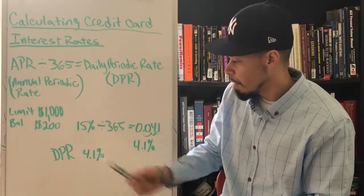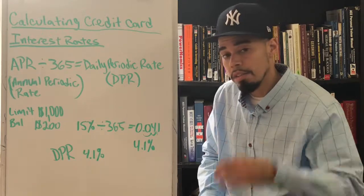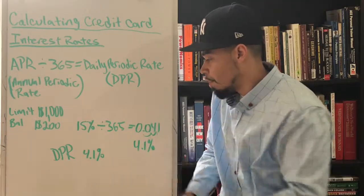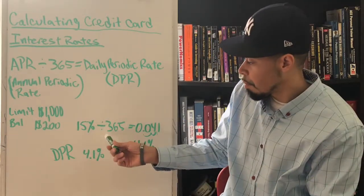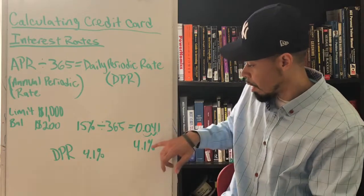So let's say your APR is 15%. So now you're going to divide your 15% by 365, which is going to give you...